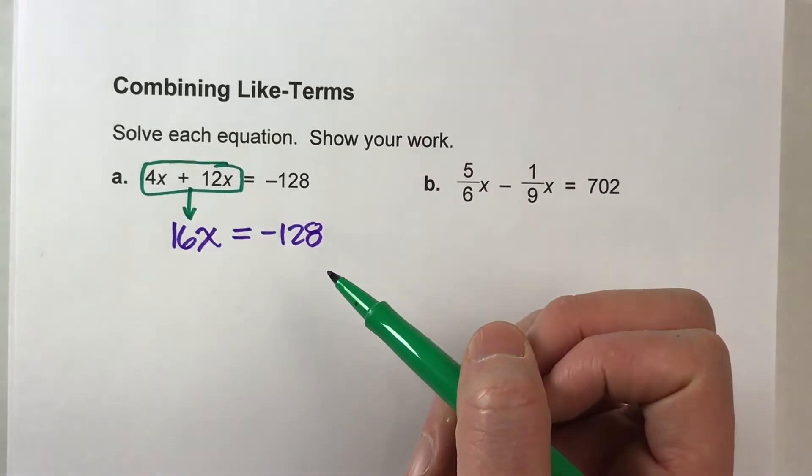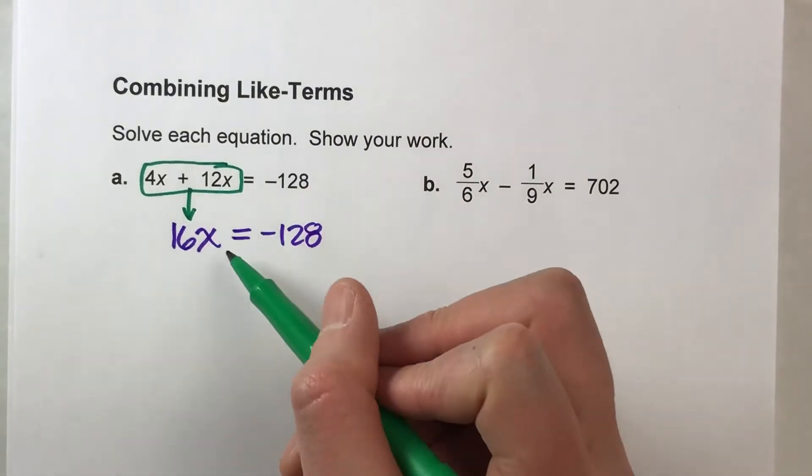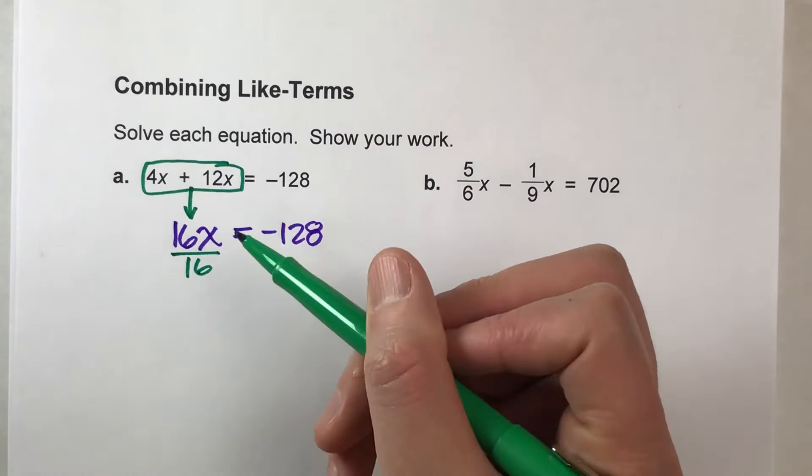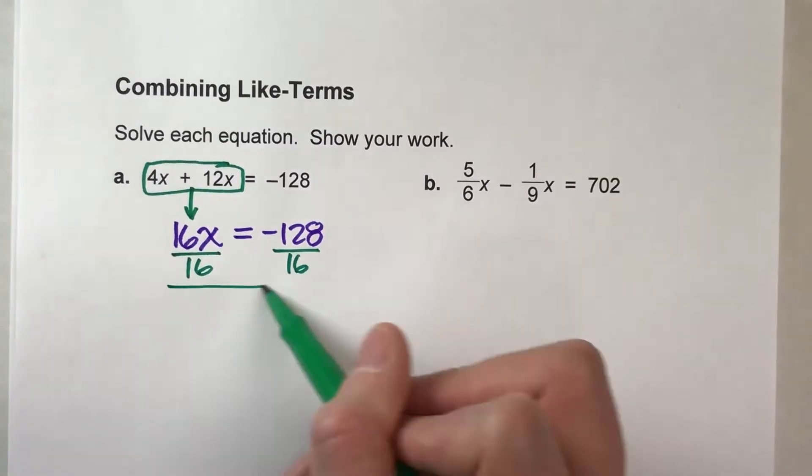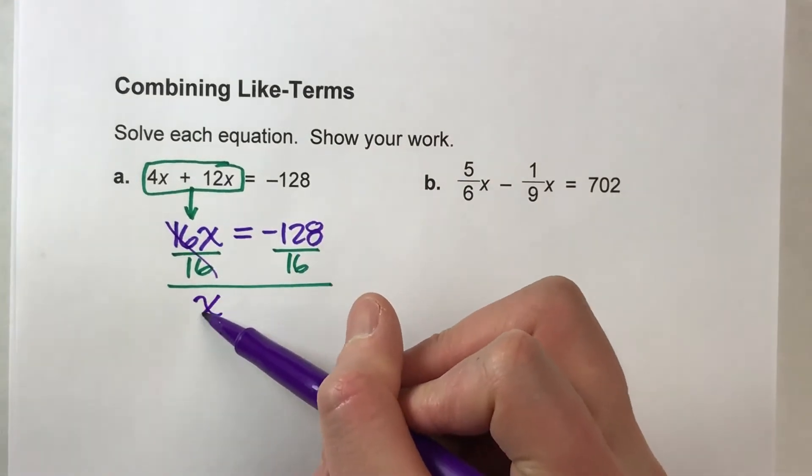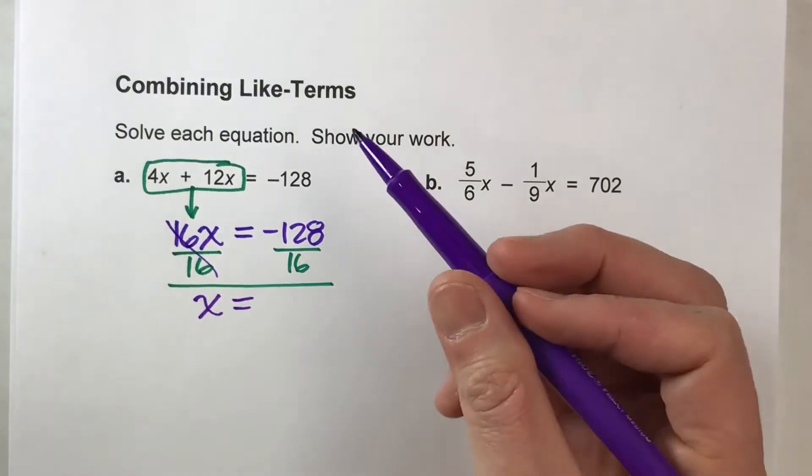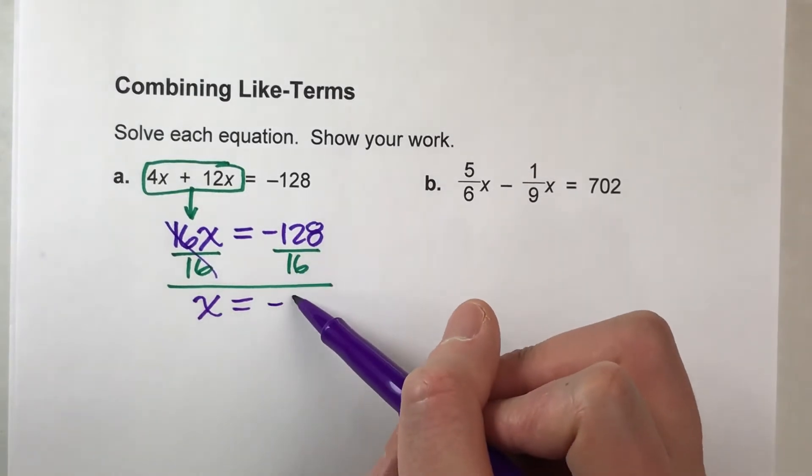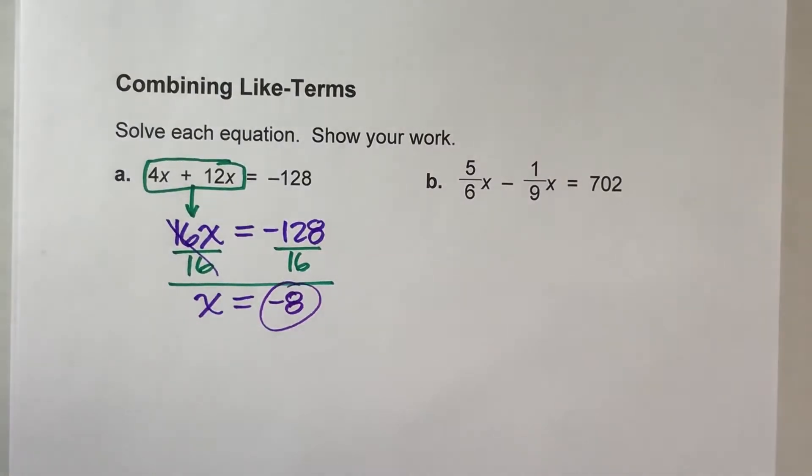But after that, now we just solve this equation like normal. We've got x times 16, so I'm going to divide by 16. What I do to one side, I have to do to the other. And the 16's undo each other. The x drops down. The equals drops down. And negative 128 divided by 16 is negative 8. And there's your answer.